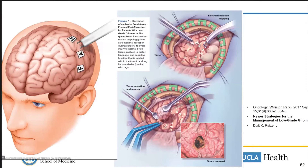What this looks like at surgery is the application of a bipolar stimulator to different cortical areas, mapping out exactly what part is related to language, and in this case what part is related to motor function — face, arm, and hand following the homunculus — and keeping those areas separate from the resection, which then takes place beyond that.